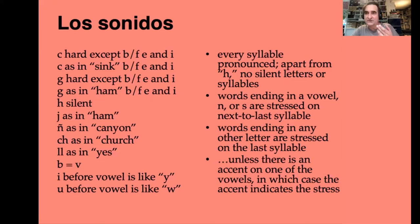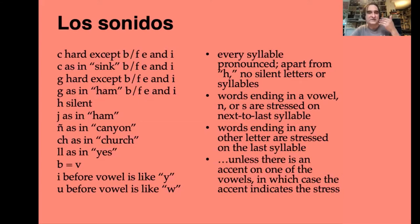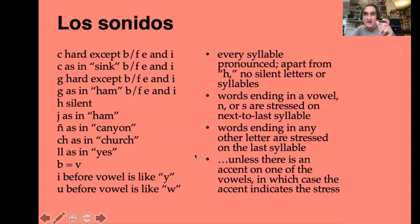The double-l sound — someone from Argentina will pronounce it very differently from someone in Andalusia or Madrid, but for our purposes we'll say it sounds like a 'y.' A 'b' and a 'v' sound very close to each other, depending on their position in the word — especially a 'v' at the beginning of a word sounds more like a 'b,' so 'Vancouver' in Spanish sounds like you're saying it with a 'b': Vancouver. If you have an 'i' before a vowel, the 'i' sounds like a 'y'; if you have a 'u' before another vowel, it sounds like a 'w.'